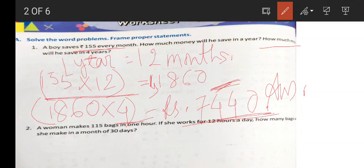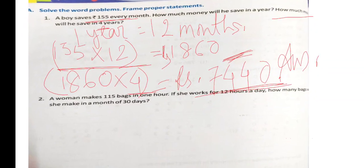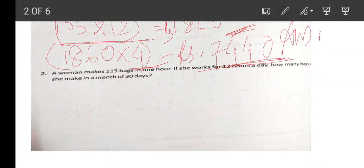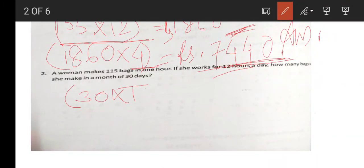Problem 30: A woman makes 115 bags in one hour. She works 12 hours a day. How many bags will she make in a month of 30 days? One day she works 12 hours a day.